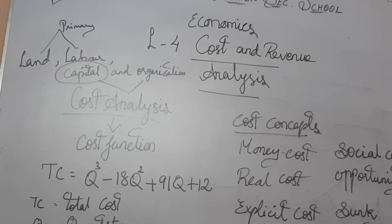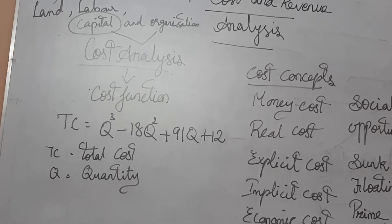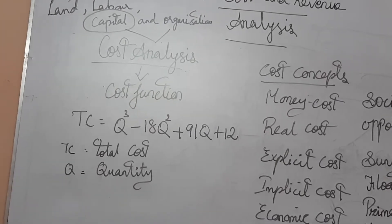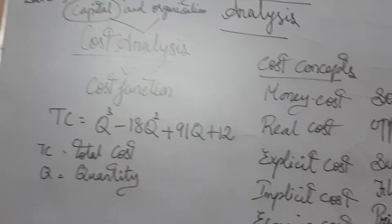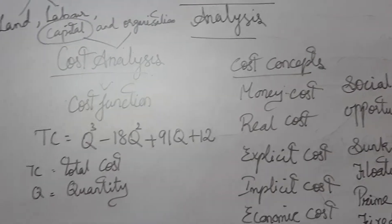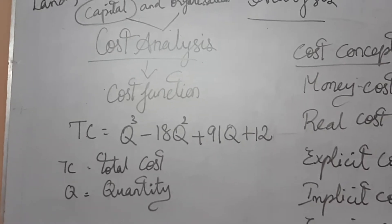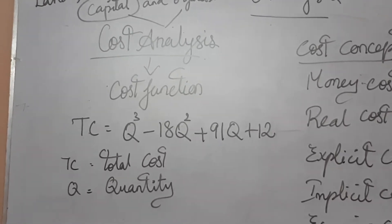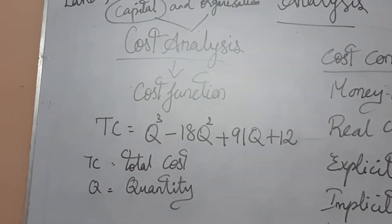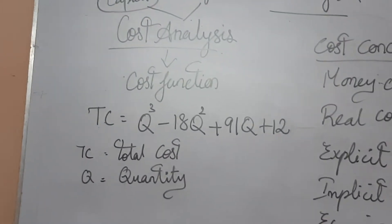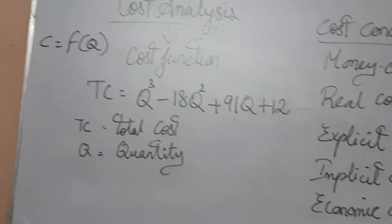The relationship between cost and output is expressed as a cost function. The money we spend to give the output — that relationship is called the cost function. We may denote this as C = F(Q), meaning cost is a function of quantity.